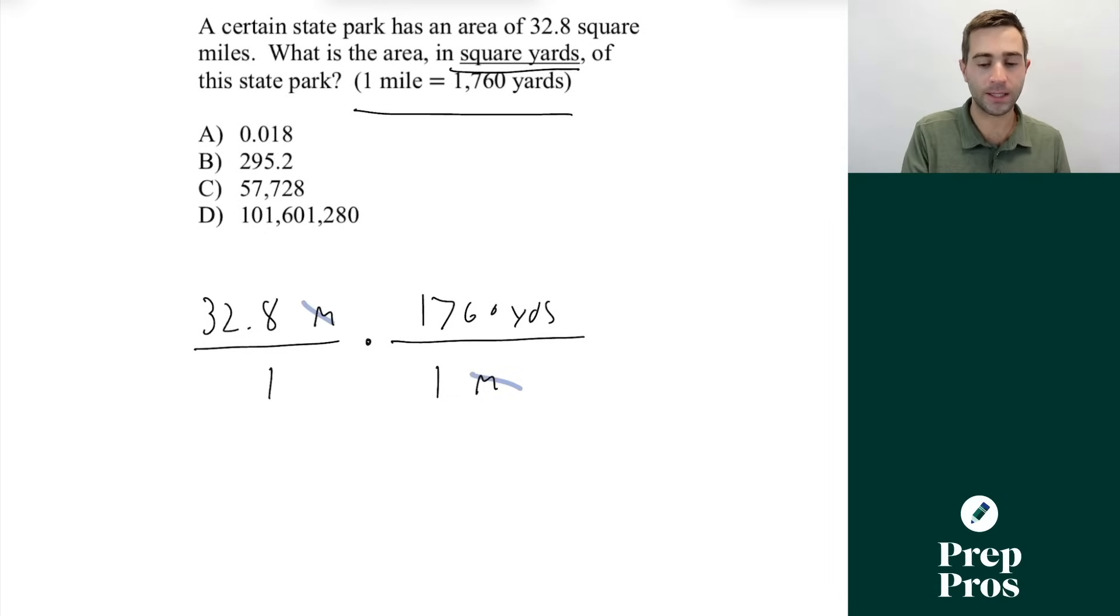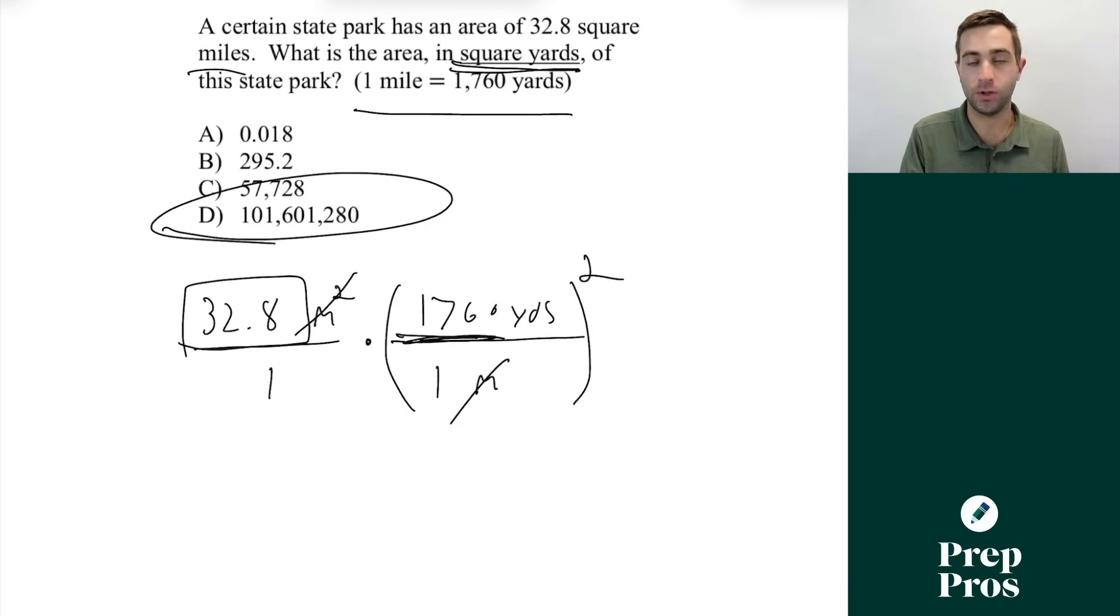But the really important thing to catch with these questions is since it is square miles, and we're converting into square yards, you always want to put your miles squared. And this means we have to square our conversion factor. If you are cubing it, you'll have to cube your conversion factor. But once you punch this into your calculator, you'll end up with our meters squared canceling out. So you're doing 32.8 times 1760 squared, and that will give you your correct answer of D.